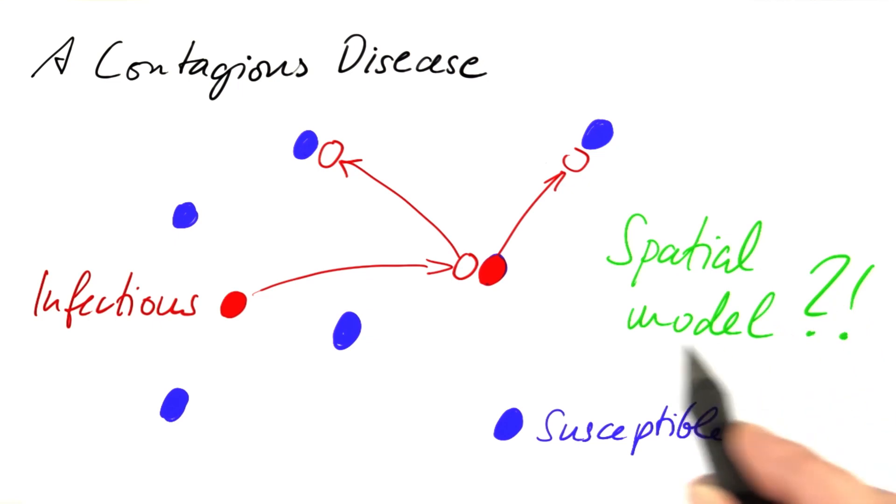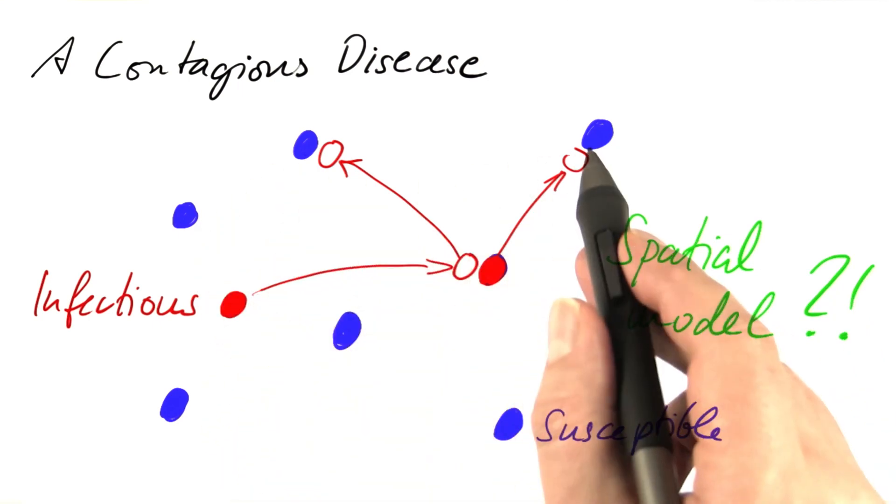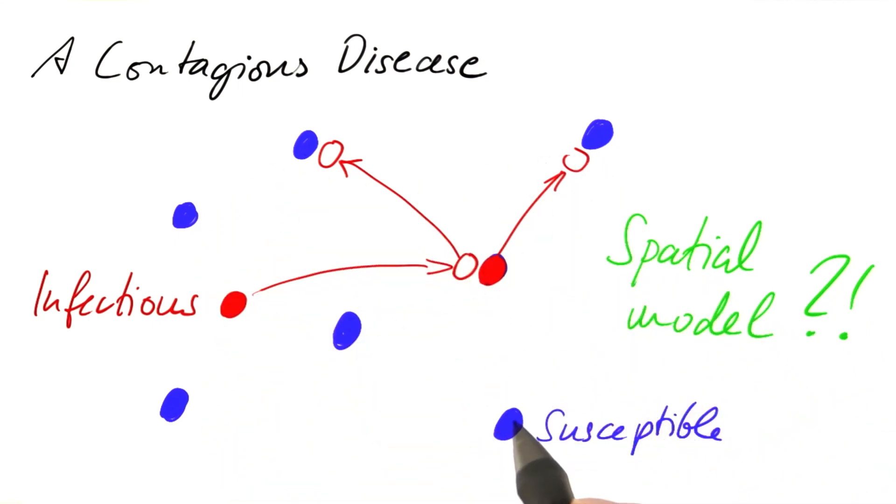This seems to cry out loud for a spatial model in which we take care of the location of these persons. That would be complex. Luckily, there is another way.